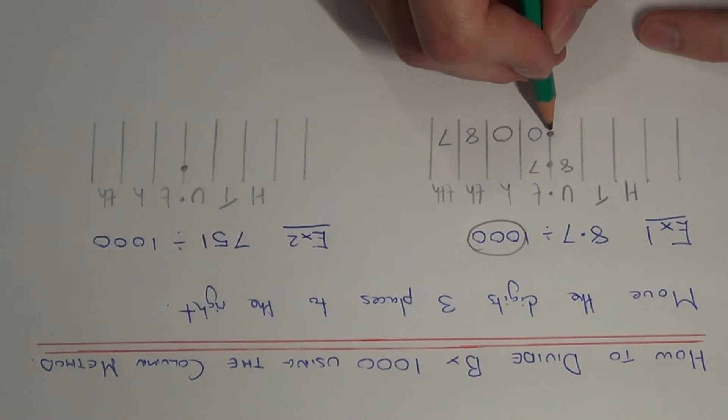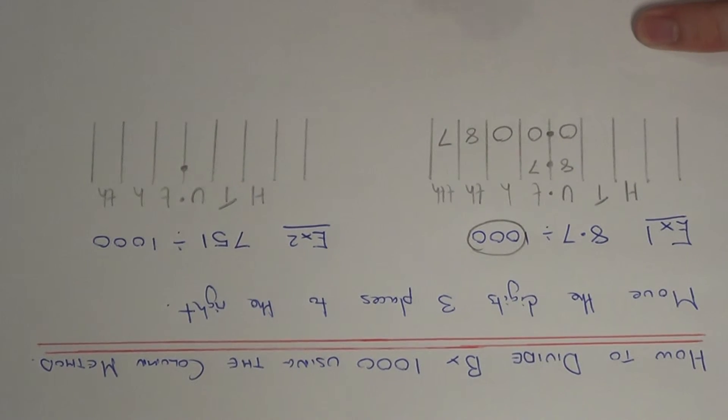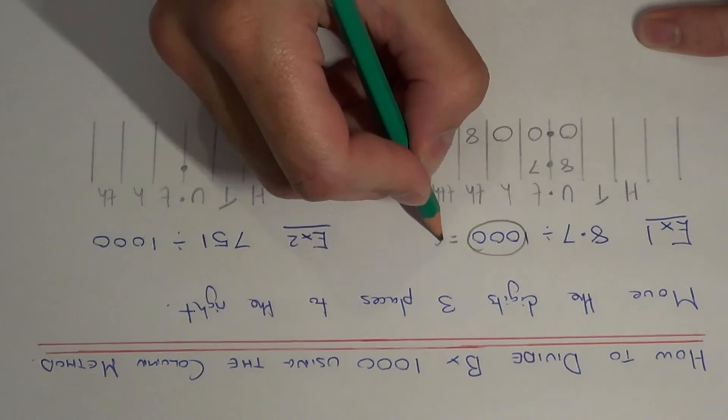And we always put a zero before the decimal point as well. So our final answer is 0.0087.